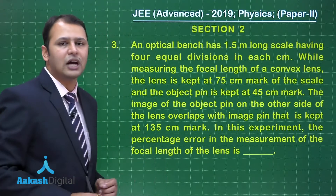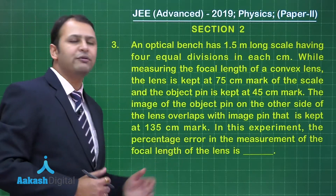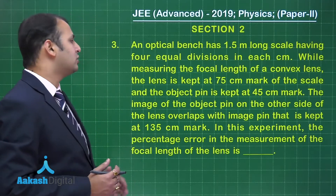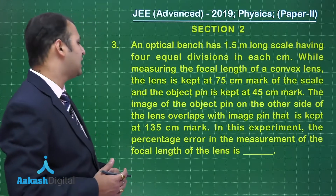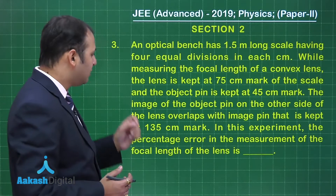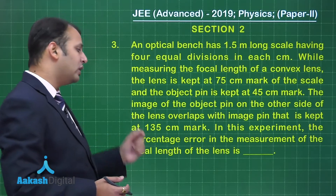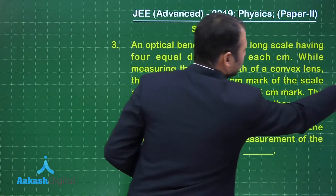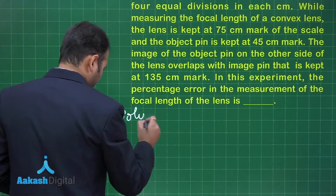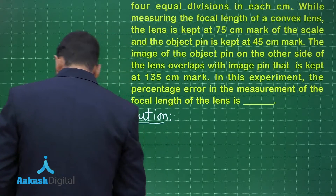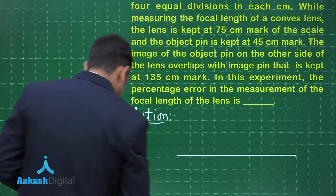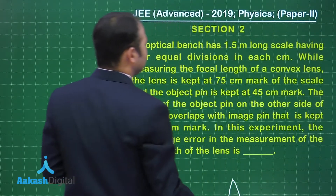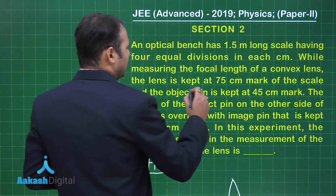Question 3 also belongs to Ray Optics. An optical bench is 1.5 meters long with a scale having four equal divisions per centimeter, meaning each division is 0.25 cm. While measuring the focal length of a convex lens, the lens is kept at the 75 cm mark of the scale and the object pin is at the 45 cm mark.